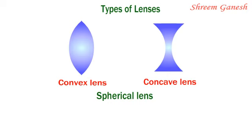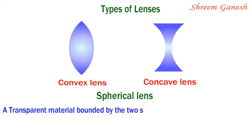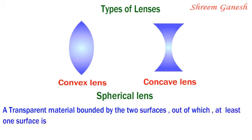Spherical lens: a transparent material bounded by two surfaces, out of which at least one surface is spherical, is known as a lens.